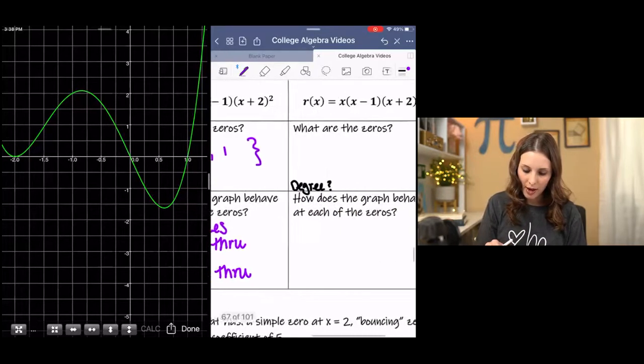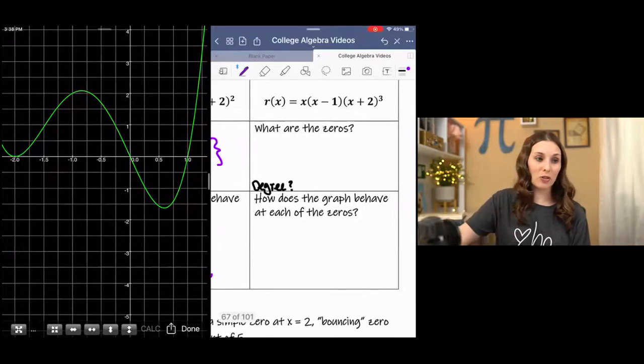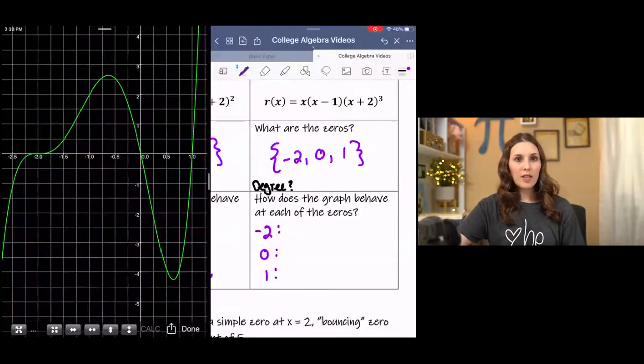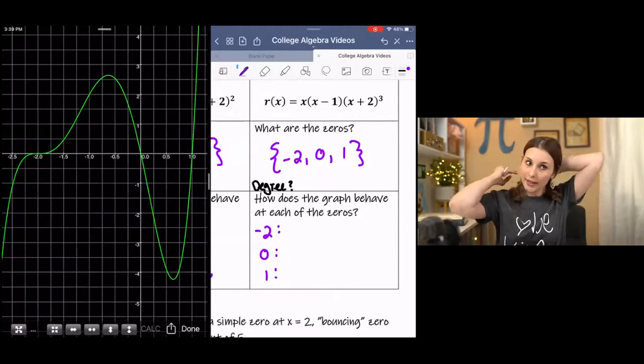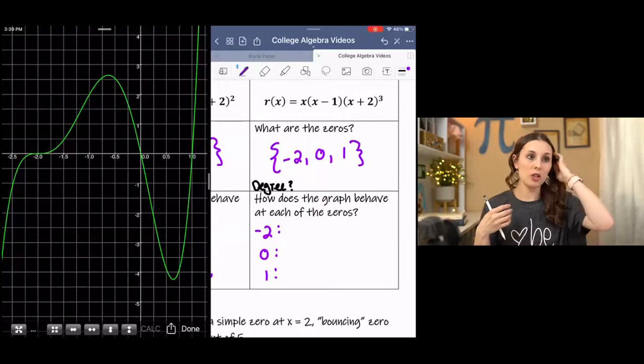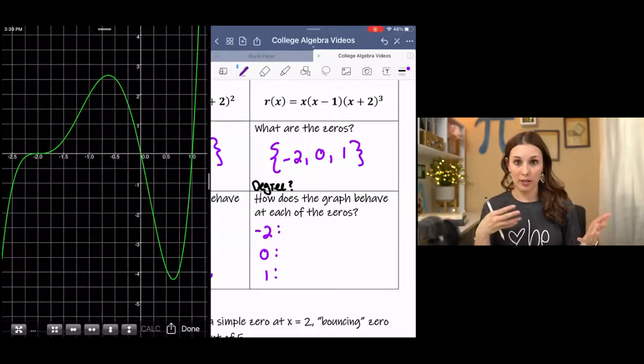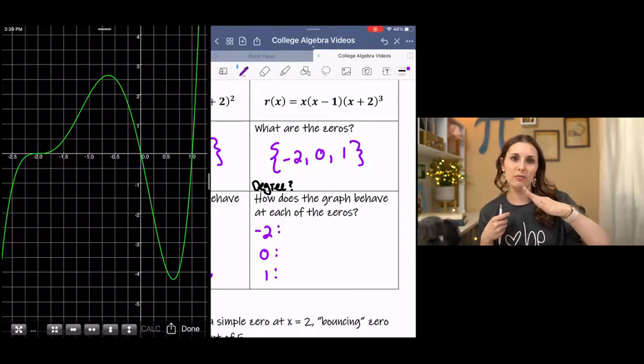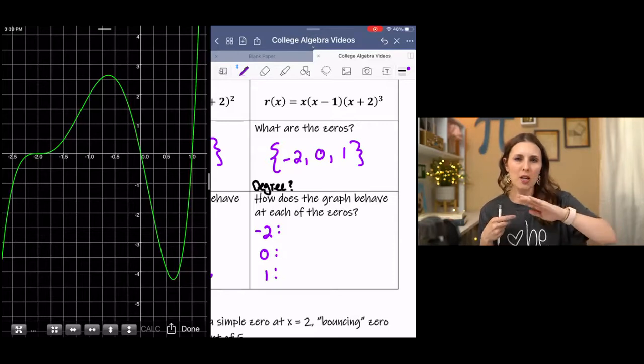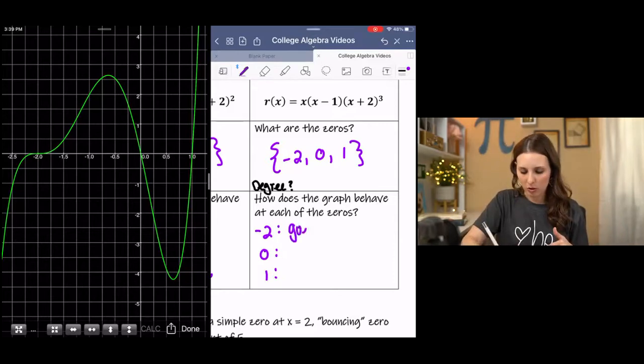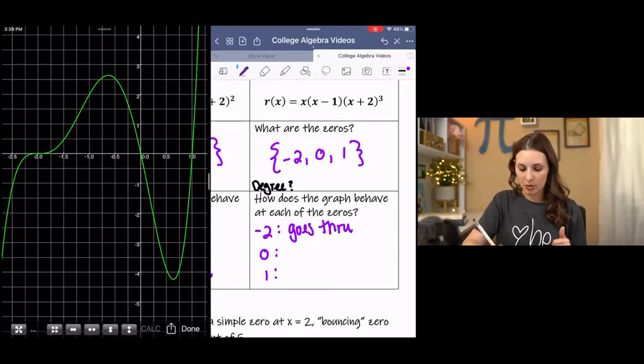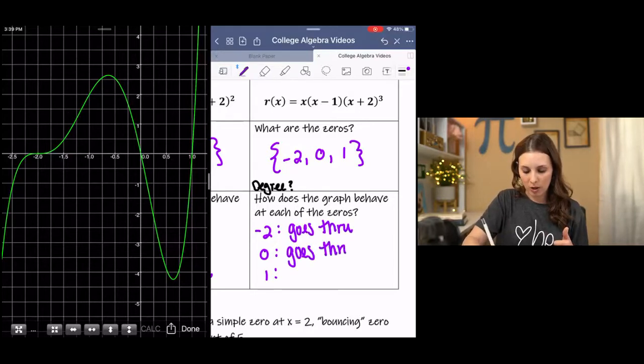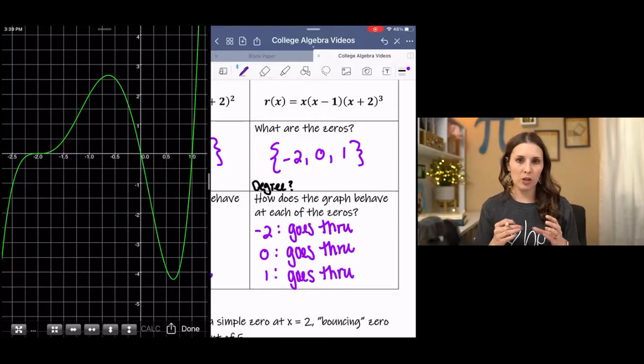And then now put the last one in your calculator and see how it compares. This is the last function in the calculator. You'll see at negative two, the only thing that changed in our function is the factor where it has a zero at negative two. It no longer bounces. It kind of jogs through maybe. But it does go through. And then same thing at zero goes through. Same thing at one goes through. Those didn't change as far as comparing the functions, the original functions. The only one that changed was the x plus two.